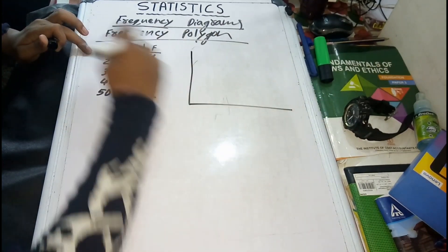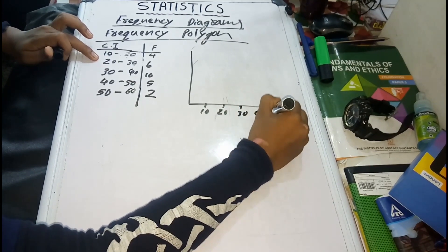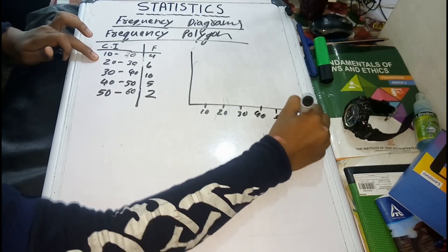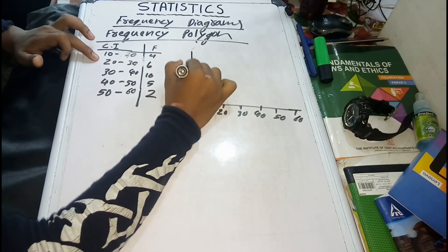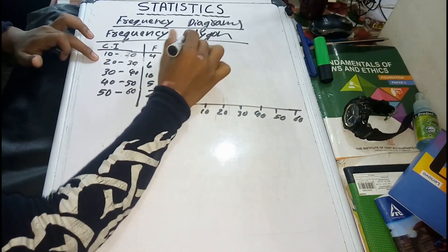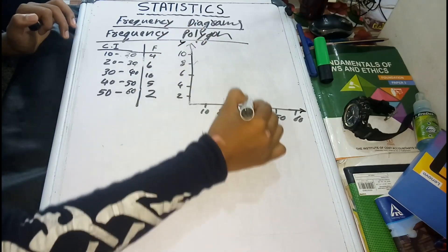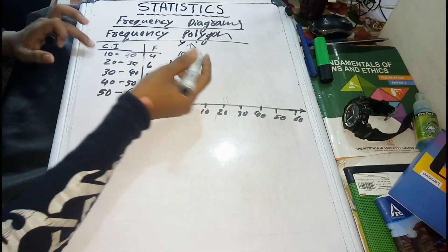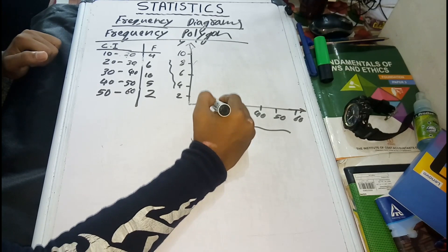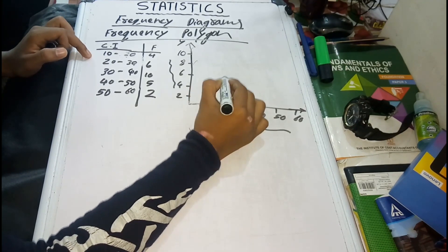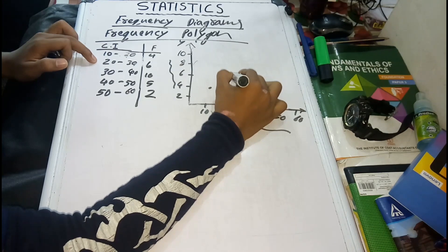This is 10 to 20, 13, 14, 15, 16, values and frequency. 1, 2, 4, 6. This is the X axis and Y axis. The formats are available. It's called frequency data, class intervals. This is the frequency data. 10 to 20. 4 is the correct. 6 is the correct.